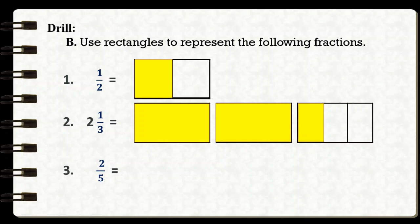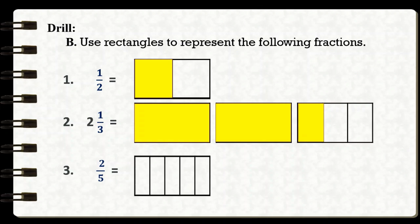For number three, to represent two-fifths, first we need to draw a whole rectangle and then divide the rectangle into five equal parts. Lastly, shade two parts of the whole, so that's equal to two-fifths.